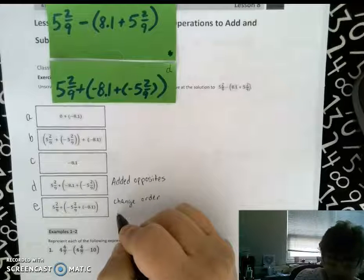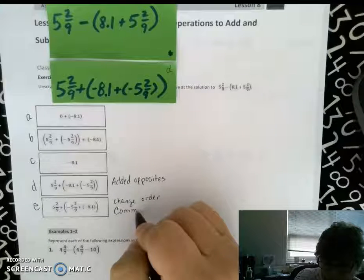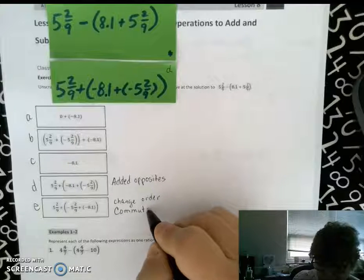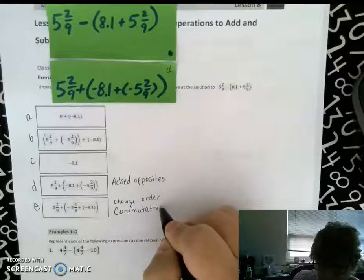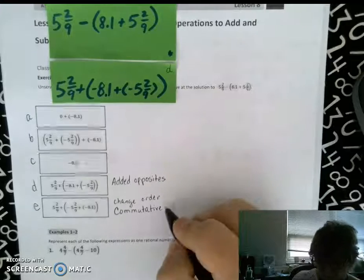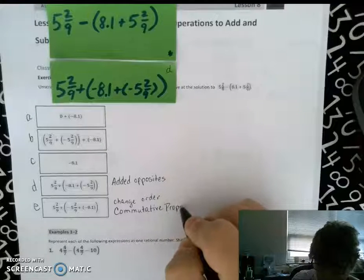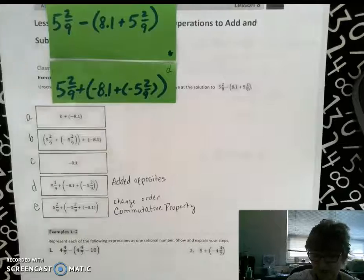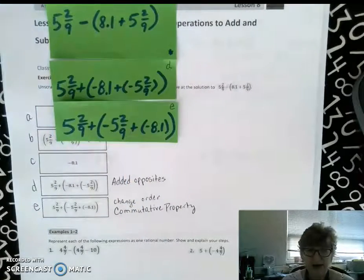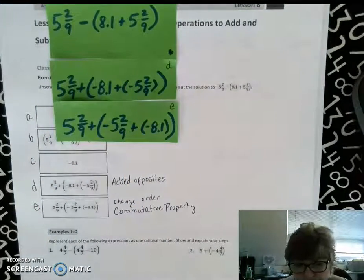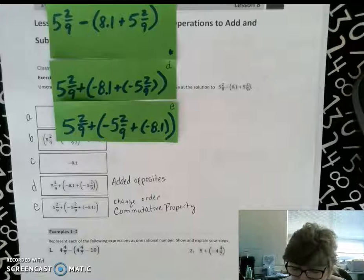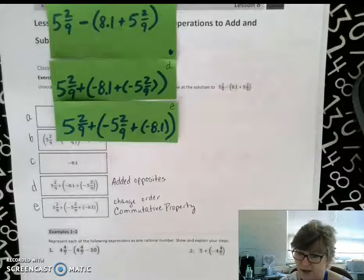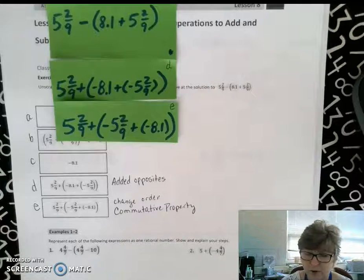We're just changing the order and we will see that occur on E. We call that the commutative property because to commute means to move and we have moved two numbers around. So we have now moved to this location of E.